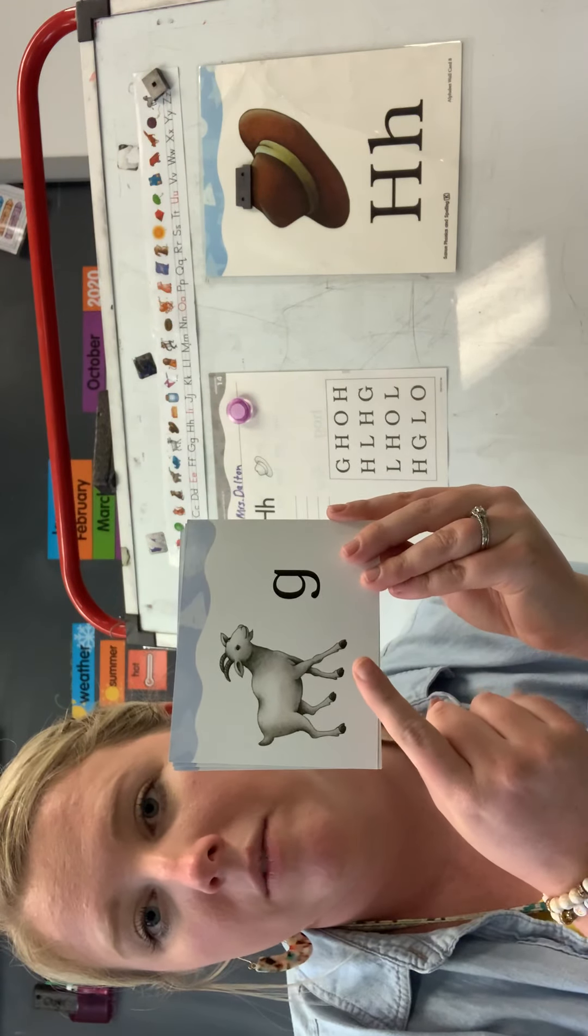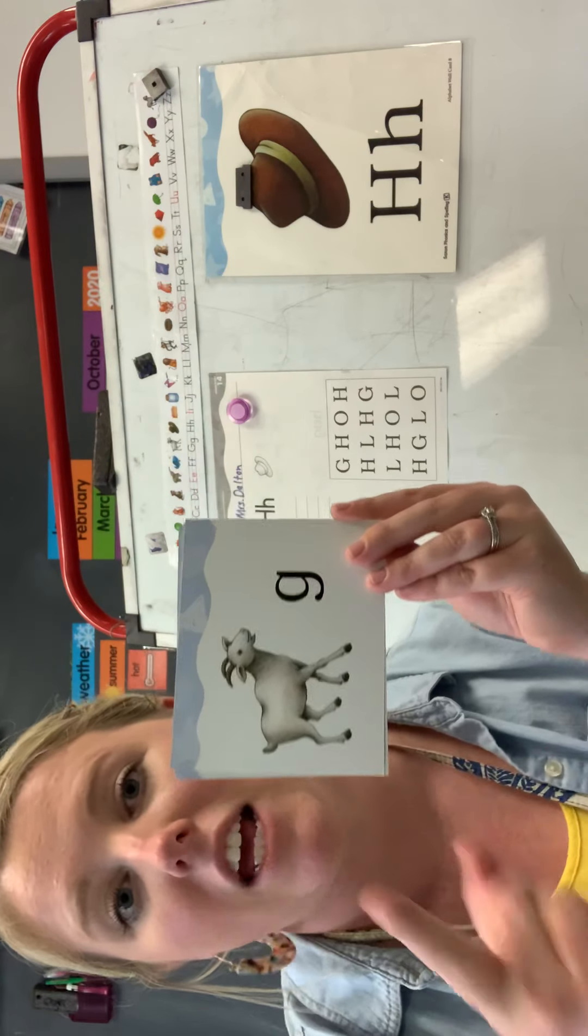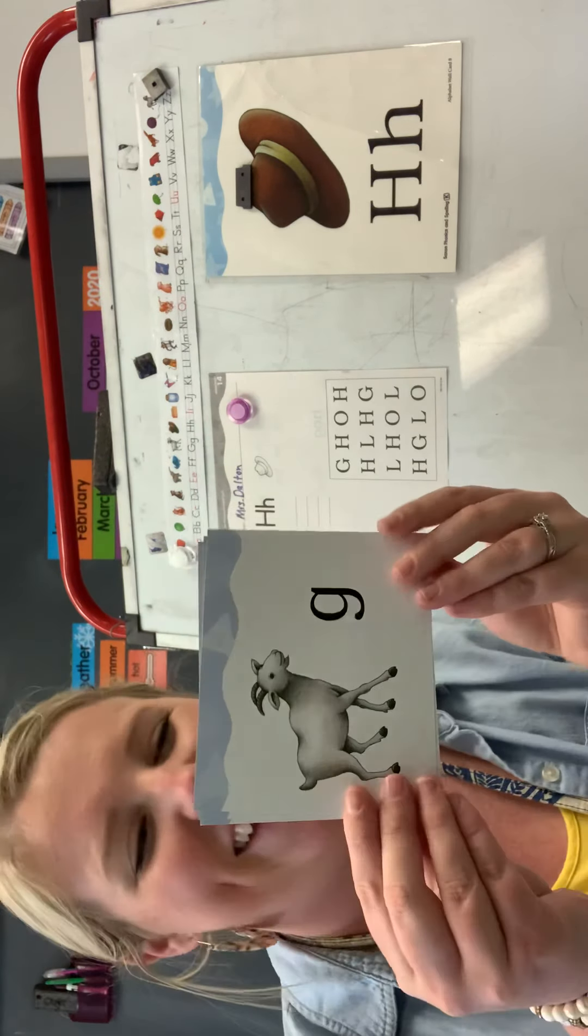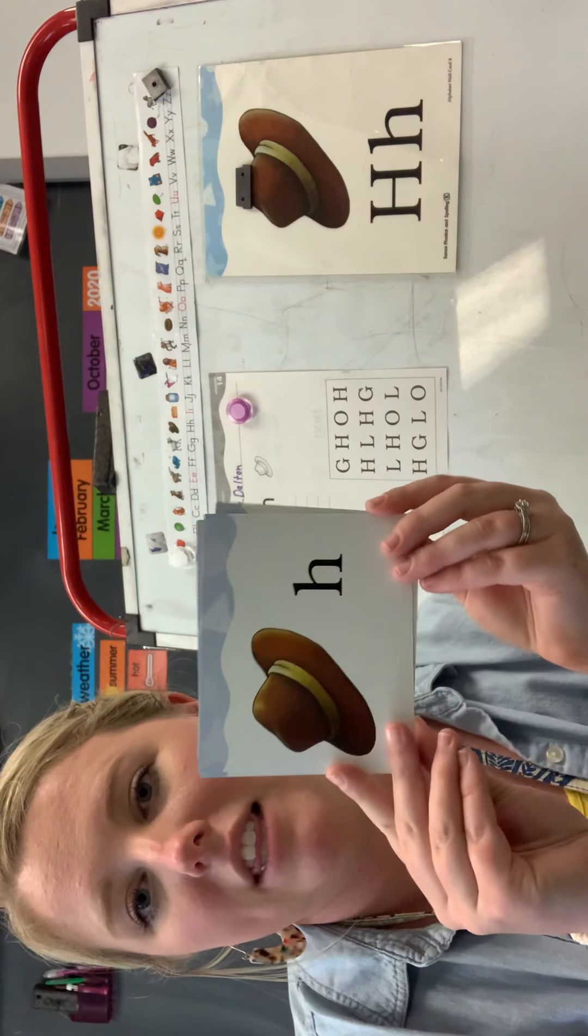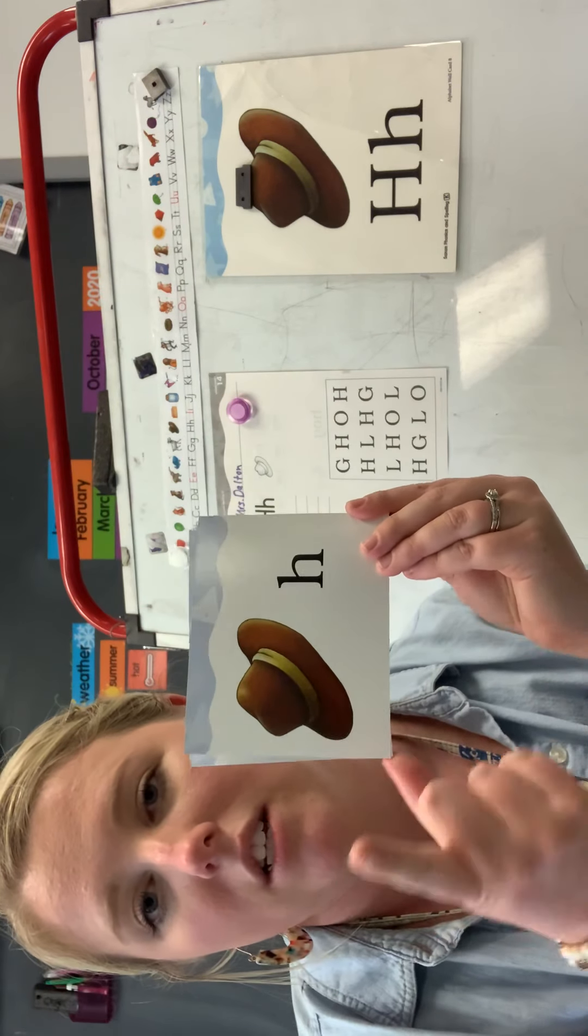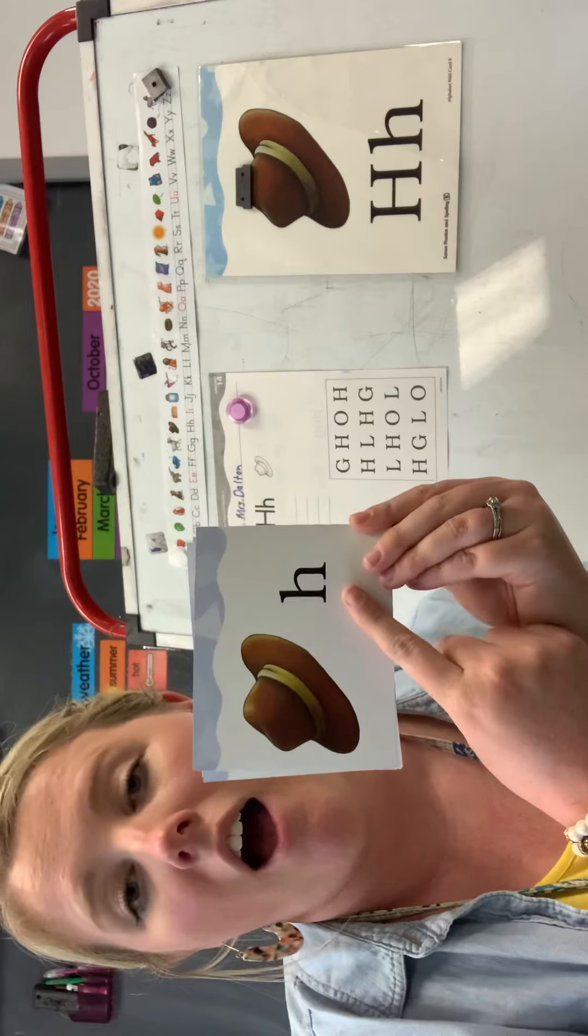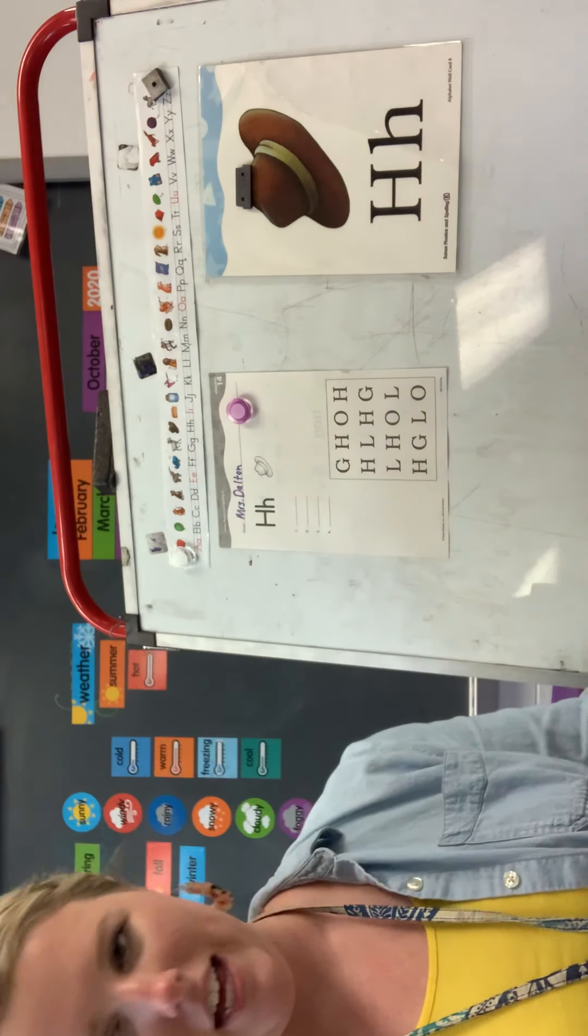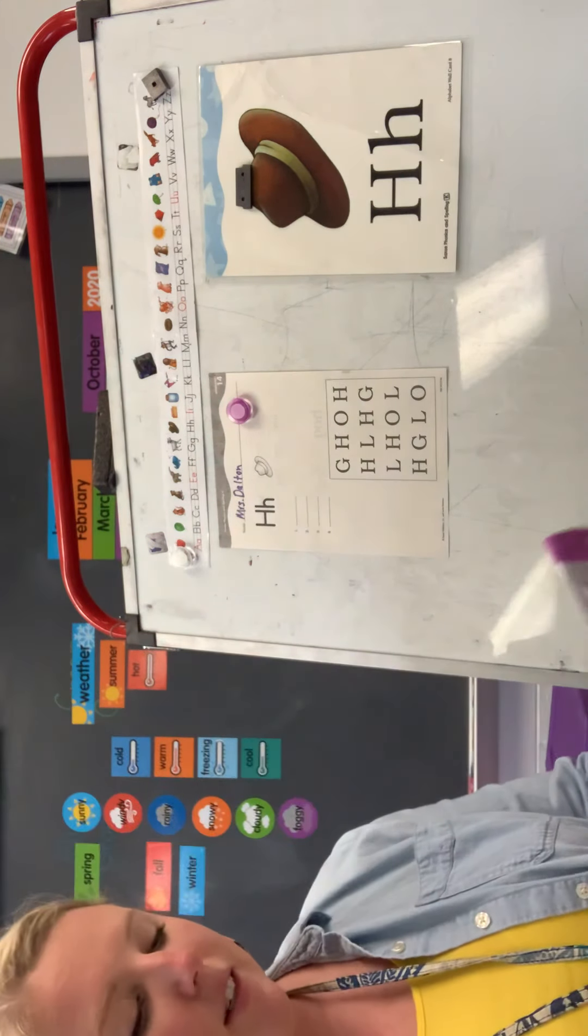What's this keyword picture and sound? Goat G. Say goat G. Good. And what is this picture and sound? Hat. Good. Awesome job, friends.